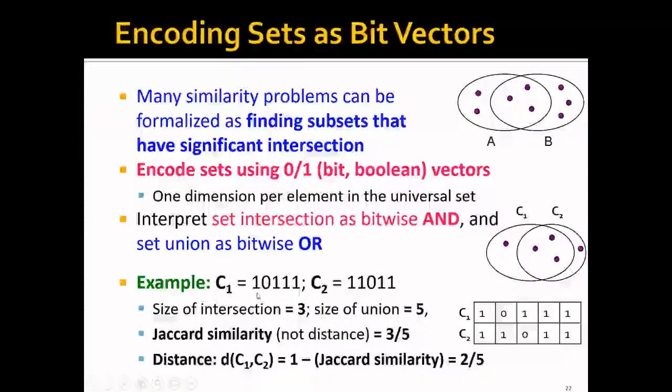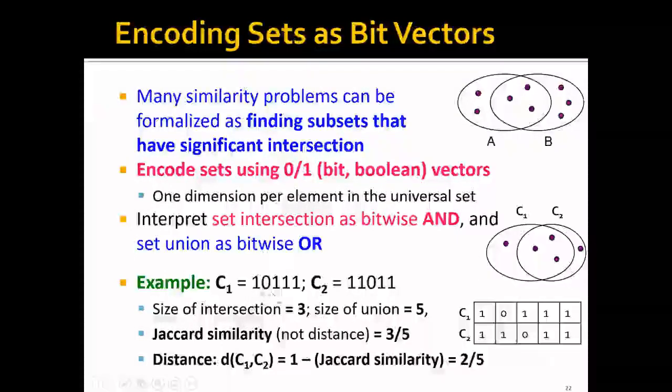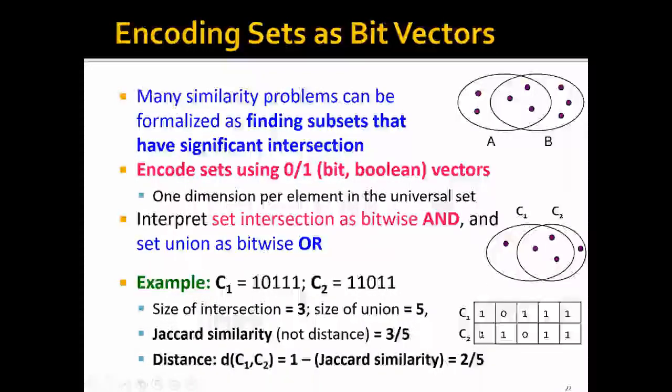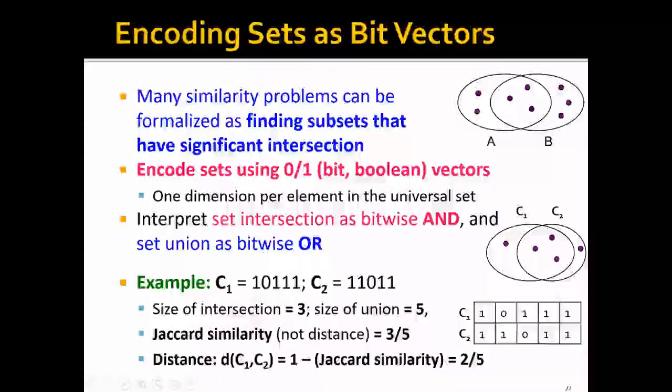Let's take a look at this example. Let's say that we have two sets, C1 and C2, and the universal set has five points. And in C1, we have four points, which is represented by a five-bit vector here. And with C2, we have also four points. And it's also represented by a bit vector. And if we want to calculate the intersection between these two sets, we only need to take the bitwise AND. If you look at these two bit vectors, the bitwise AND would be just 1, 0, 0, 1, 1.